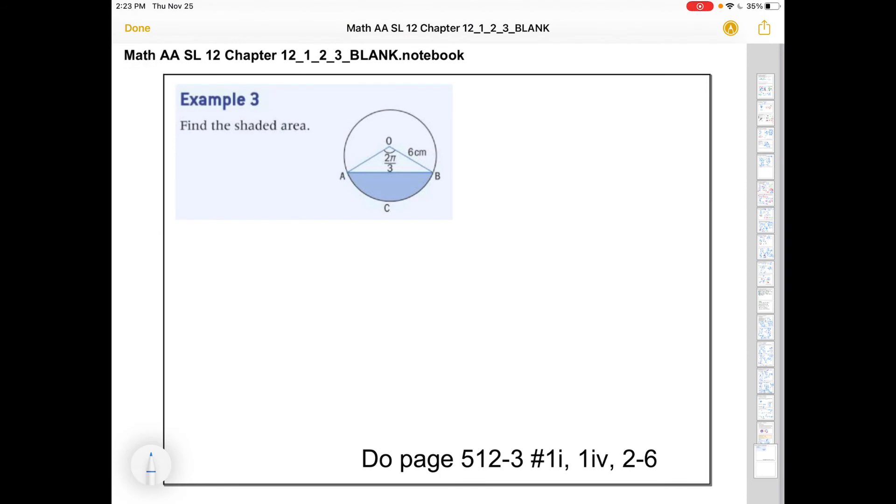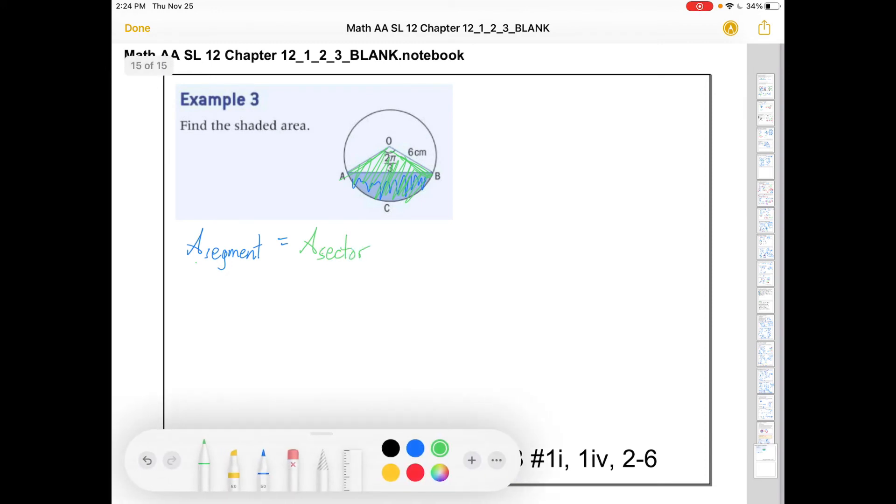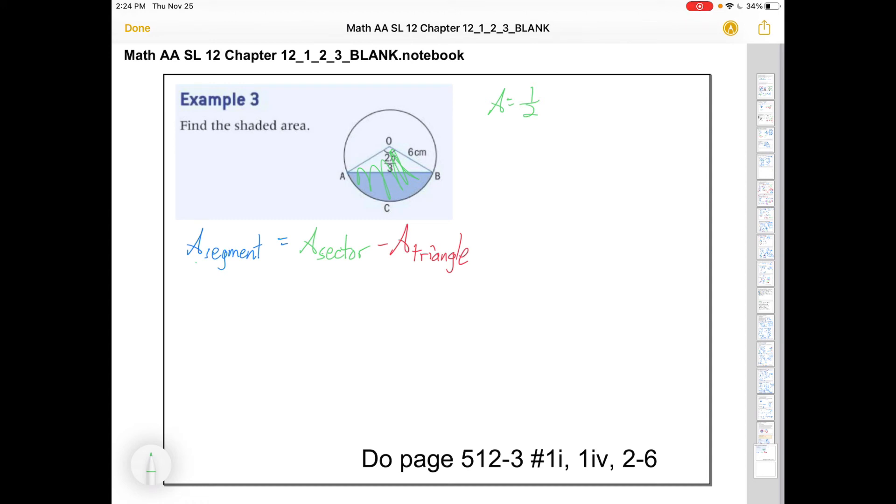Lastly we're asked to find the shaded area here. This is a segment that we want to find the area of, and what's annoying is that we don't have any direct formulas for it. But if I look at this, I think there's a sector here that's all in green. If I found the sector area, the area of the segment is the sector area minus the unfilled in part, and you can probably guess what shape that makes: minus area of the triangle. Let's find the area of that sector.